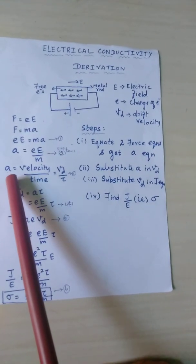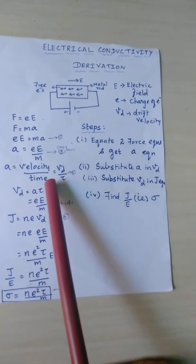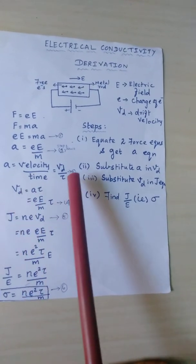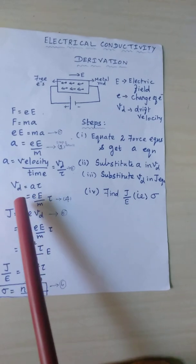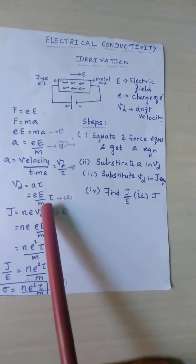In general, we know that acceleration is velocity divided by time. Then the drift velocity Vd equals aτ, which we can write as Vd = (eE/m)τ.